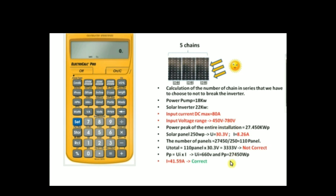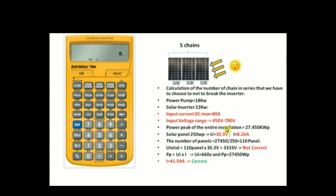As a solution, we choose a voltage to deliver to the inverter that must be within the valid range of 450 volts to 780 volts. We're going to choose 660 volts — you can choose any value within this range. You also have to watch the input DC current delivered to the inverter, which must not exceed 80 amps.